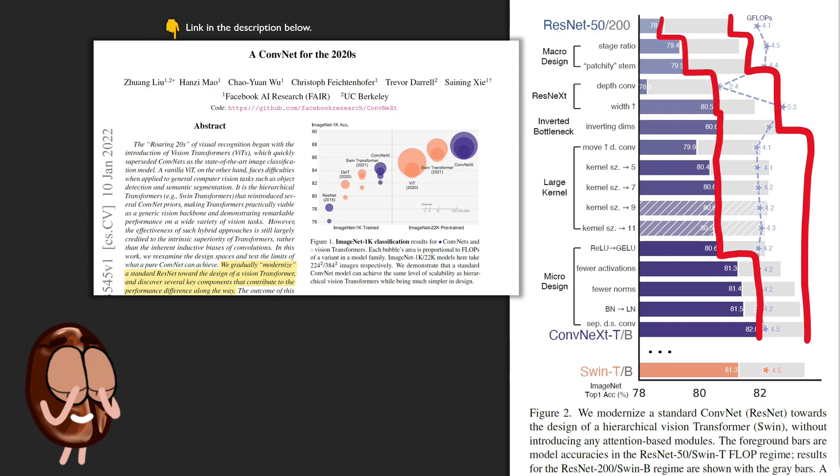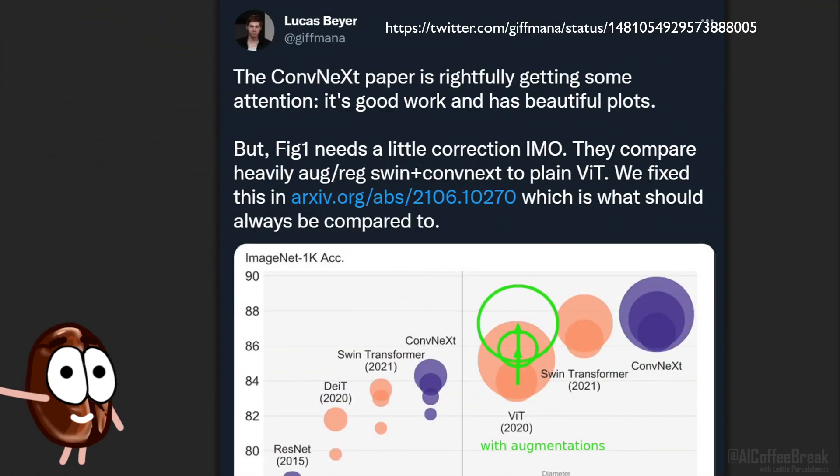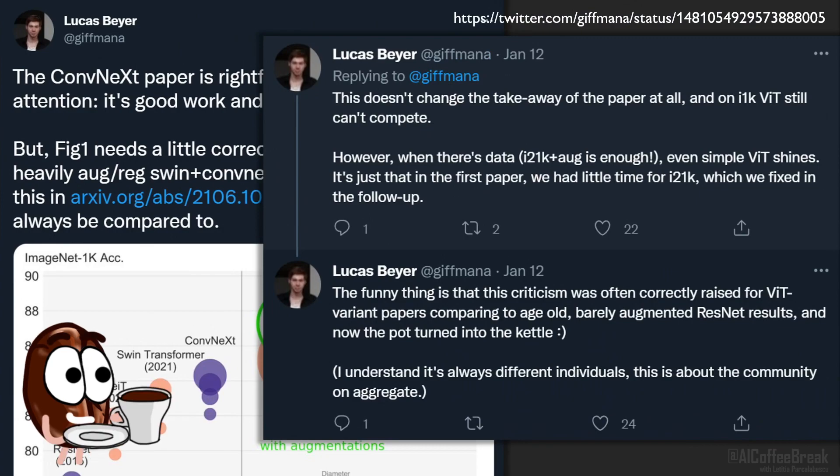And maybe a tiny critique that almost any paper in machine learning deserves. Let's not forget that papers do the comparisons they like and suit them best. Ms. Coffee Bean will leave you to this tweet, also linked in the description below, where one of the VIT authors points out that convnexts were compared only to plain VIT, while Swin and convnexts had heavy augmentation. Judge for yourself, but also do not forget to count the number of times you took the baselines you liked the most.